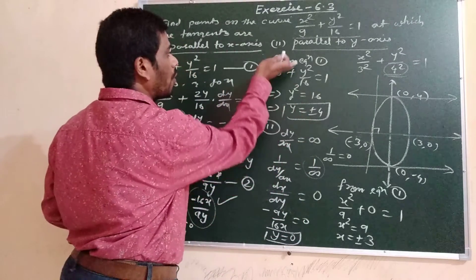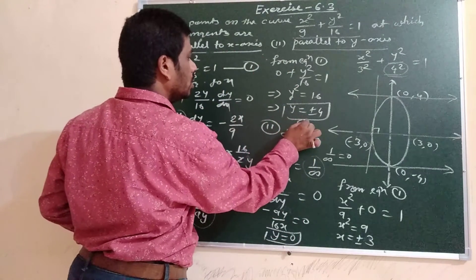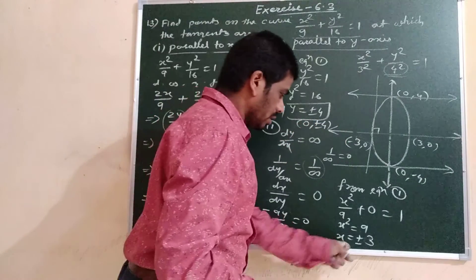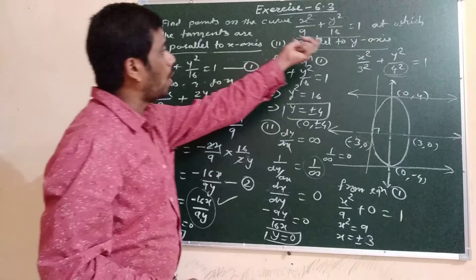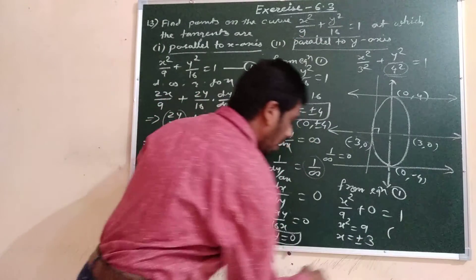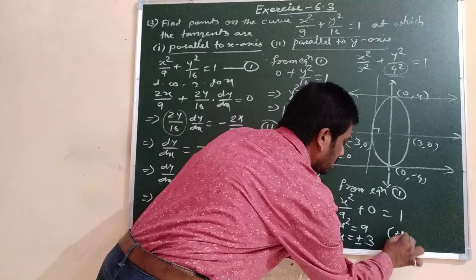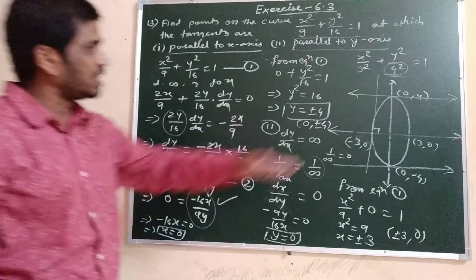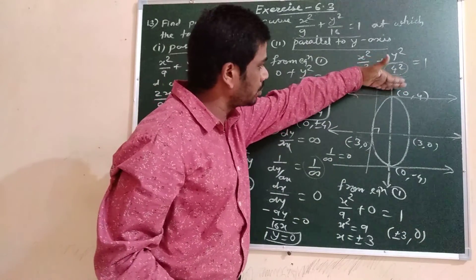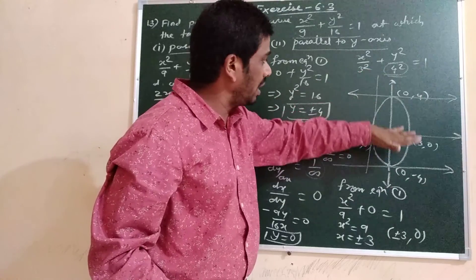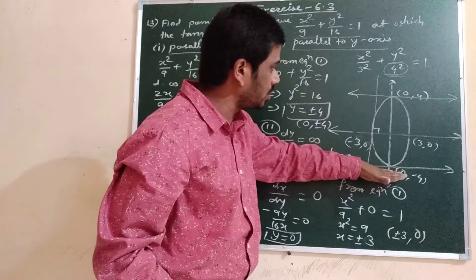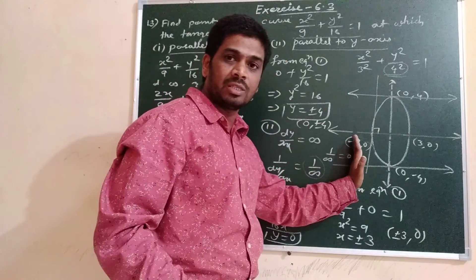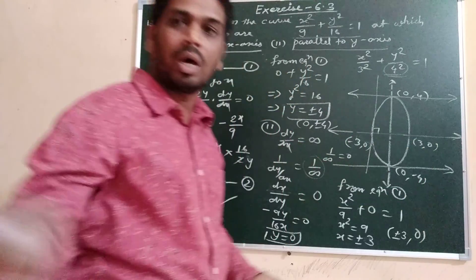So the final answers are: for tangents parallel to the x-axis, the points are (0, ±4); and for tangents parallel to the y-axis, the points are (±3, 0).